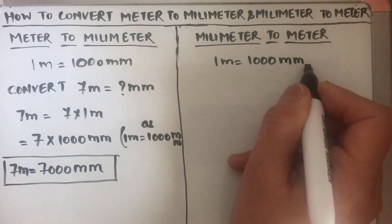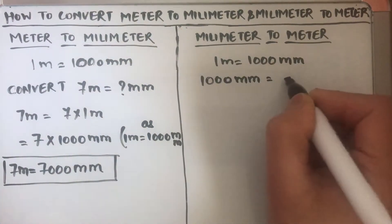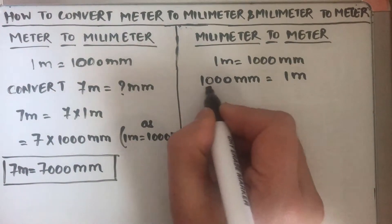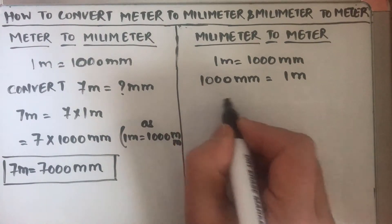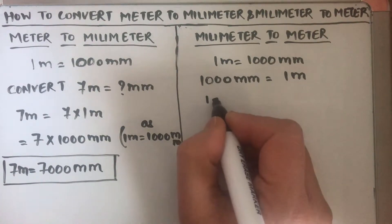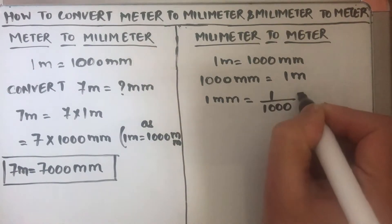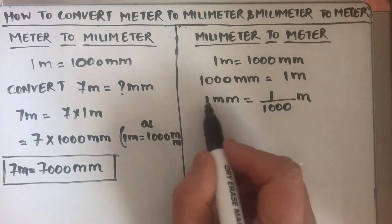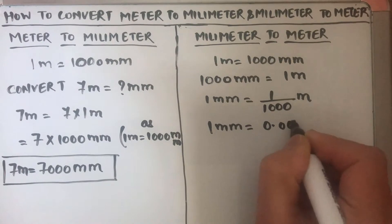We know that one meter is thousand millimeters. Now we need to find how many meters are there in a millimeter. We are going to switch the relation and write the right-hand side on the left, so thousand millimeter is one meter. Then we divide both sides by thousand to get one millimeter, and we find that one millimeter is equal to one over thousand meter, or 0.001 meter.